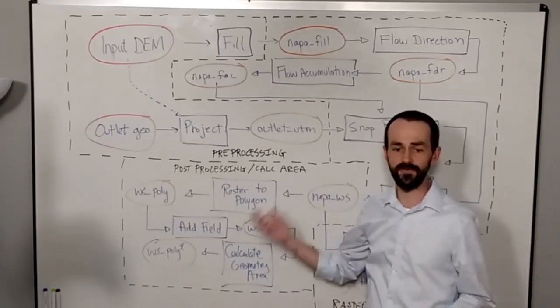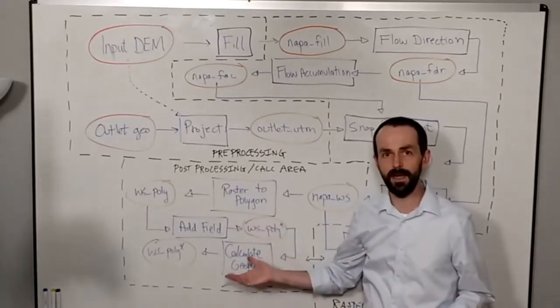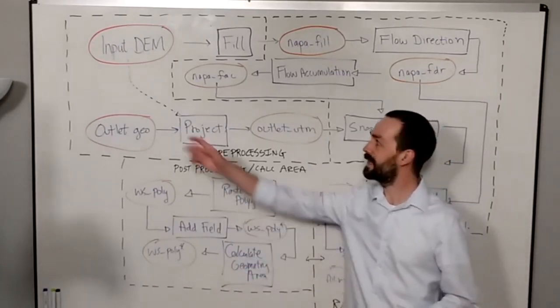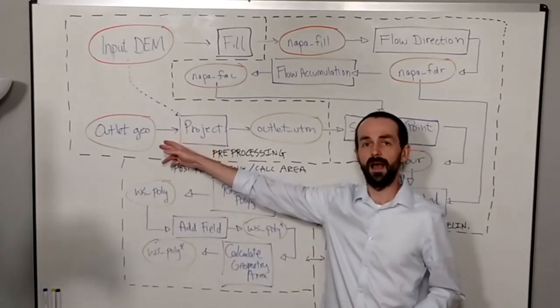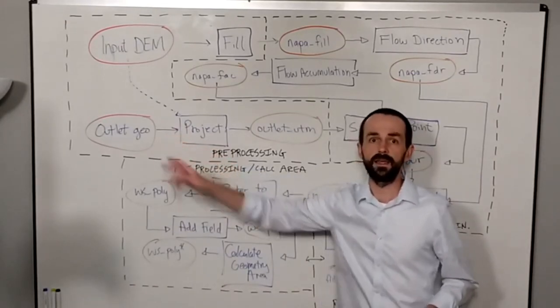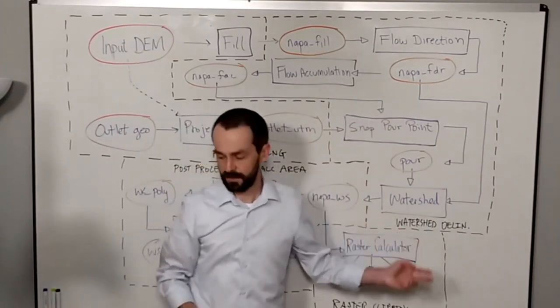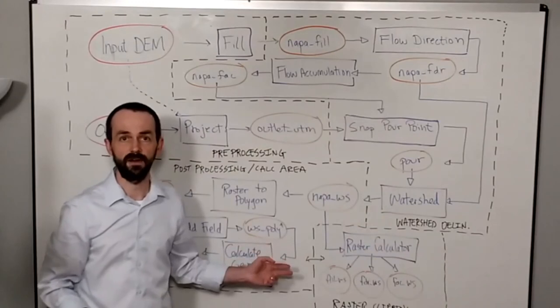So we define ourselves this automated process called the workflow that we can then just give different inputs, and then with one click, get a watershed output or get a watershed output with calculated areas.